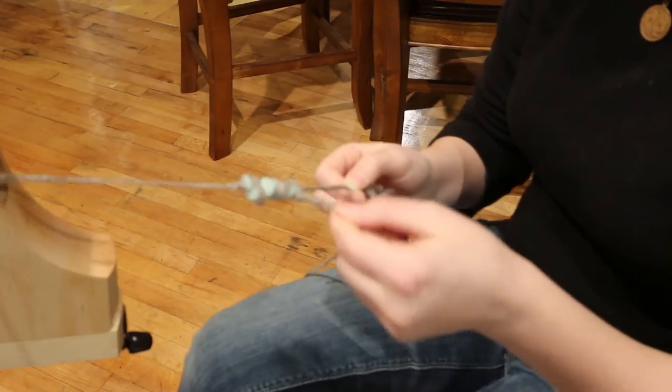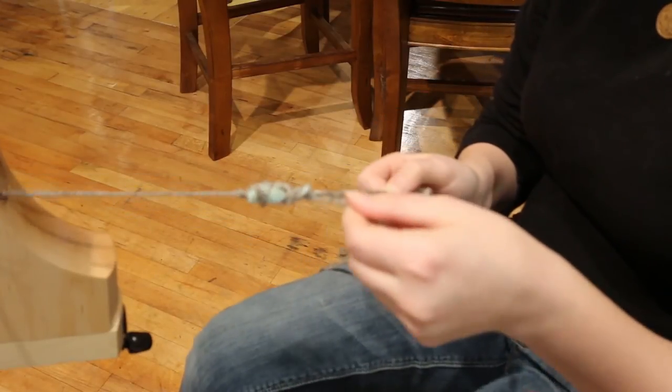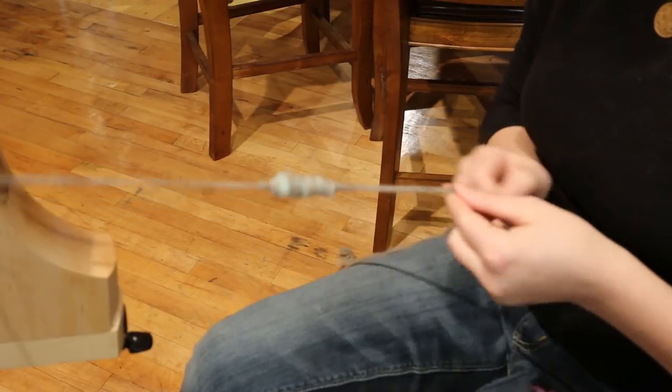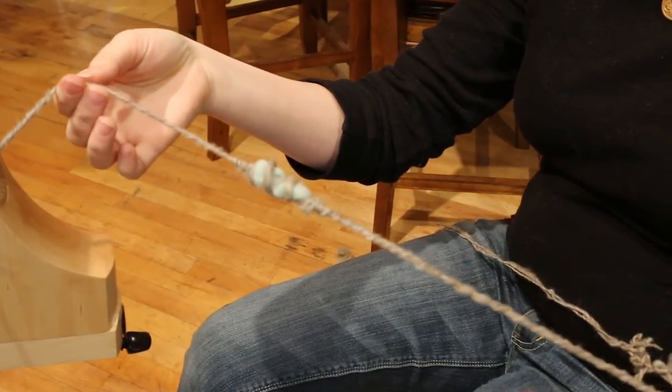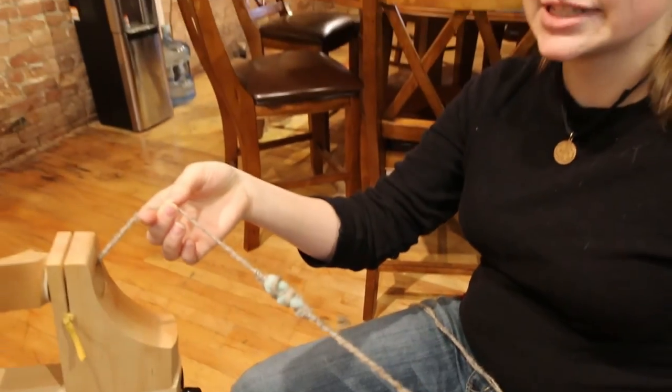Then anchor at the other end by switching the tensions of your hands to wrap around, and then move on to continue plying as you did. This is the effect of stacks and stack trapping which you'll find in a lot of art yarns.